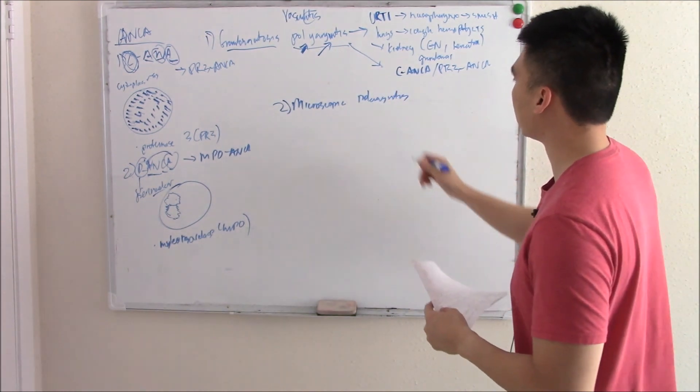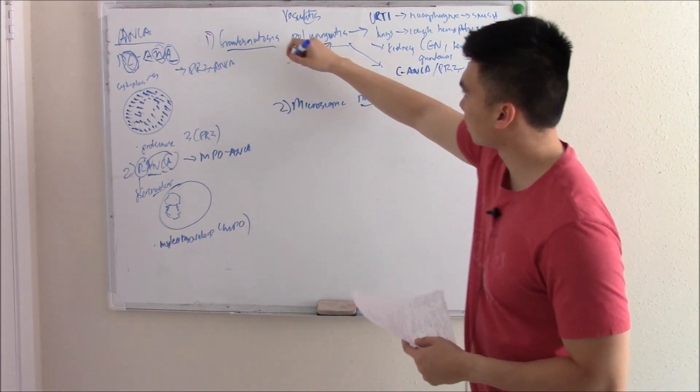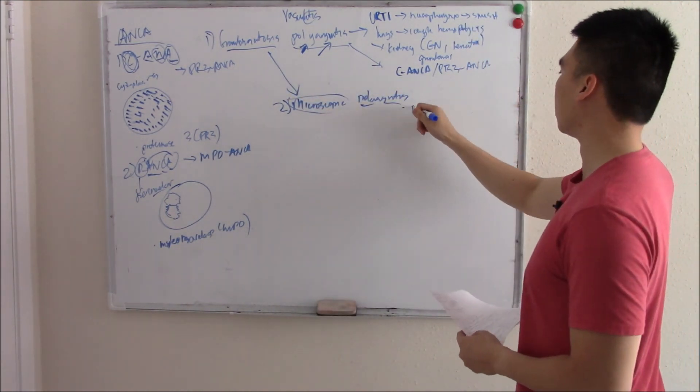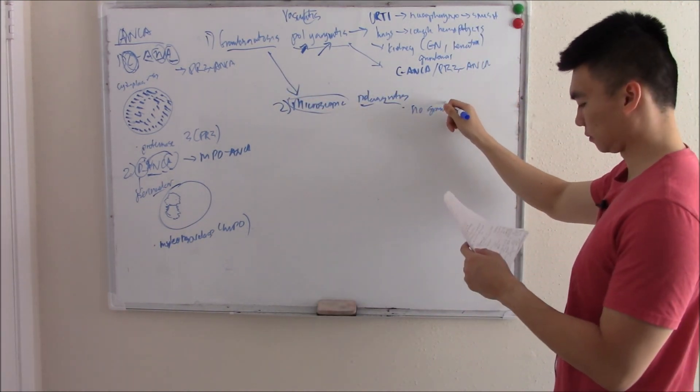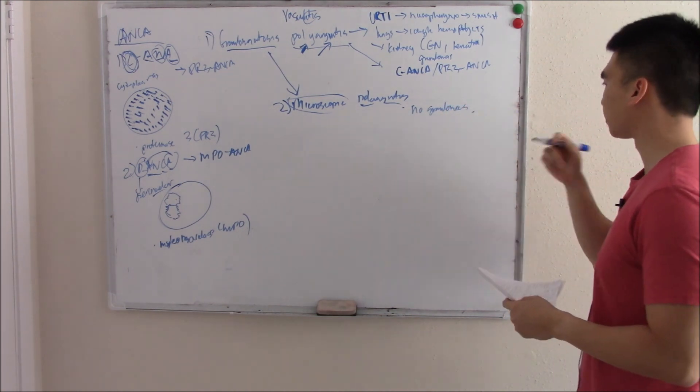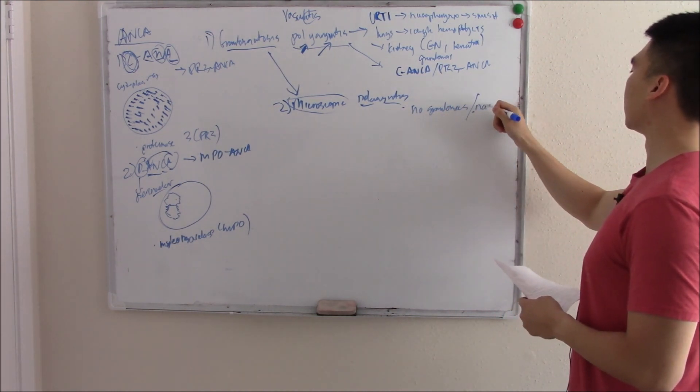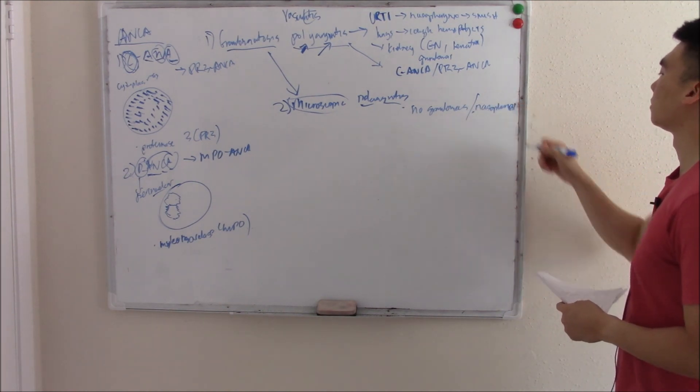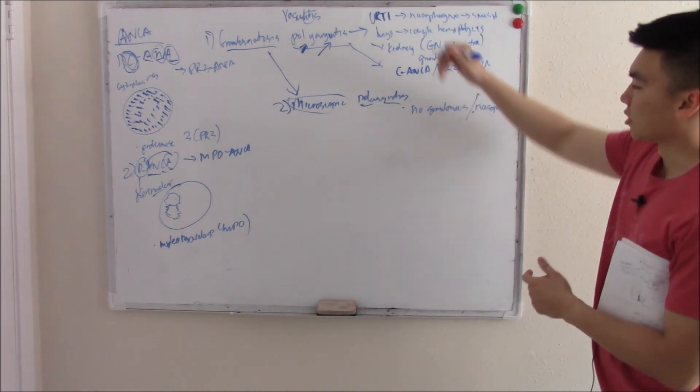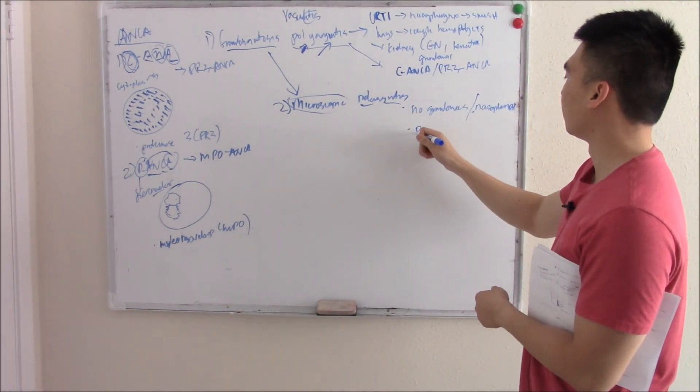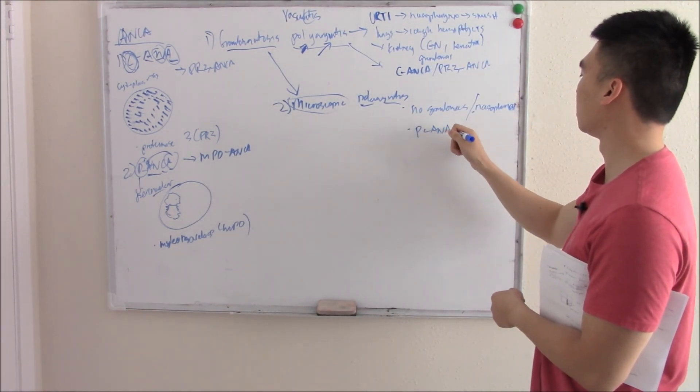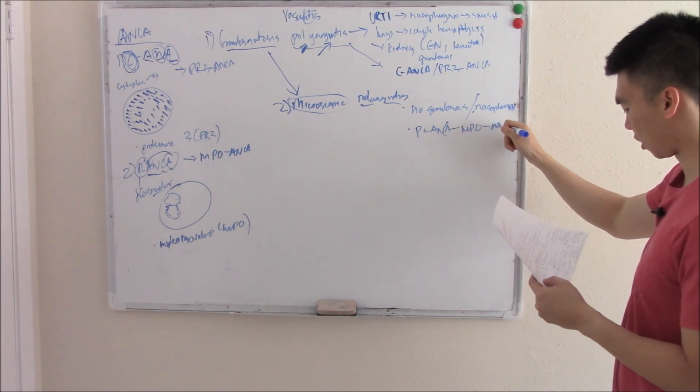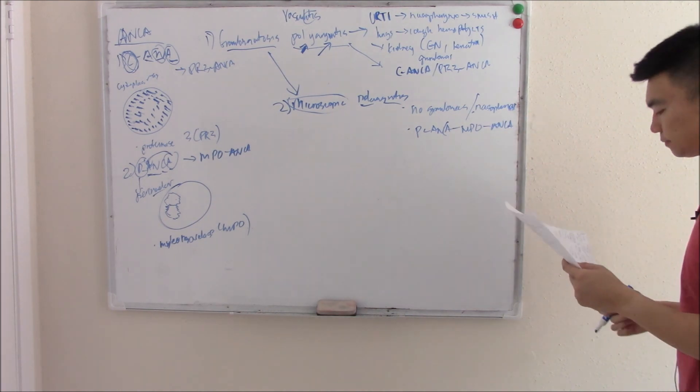Microscopic polyangiitis - again, inflammation of multiple vessels. But we dropped the granuloma from the name, we don't have any more granulomas. And that's exactly what you see - no granulomas. It also doesn't affect the nasopharynx. And if that wasn't enough to differentiate the two, it is not c-ANCA positive, it is p-ANCA positive, also known as MPO-ANCA positive.